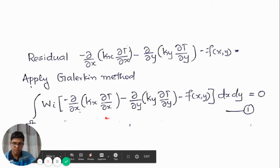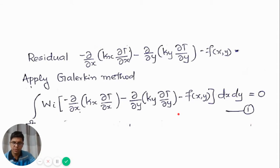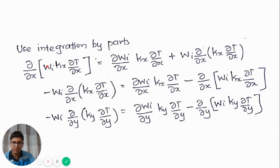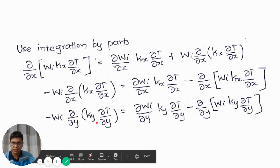This equation represents the strong form, and we need to convert it into the weak form. For that we use integration by parts. We take the term d/dx(wi * kx * dT/dx) and expand it as dw/dx * kx * dT/dx plus wi * d/dx(kx * dT/dx). This allows us to rewrite the term present in the equation by moving it to one side, giving us dw/dx * kx * dT/dx minus d/dx(wi * kx * dT/dx). Similarly the term containing the partial derivative with respect to y can be written in the same way.